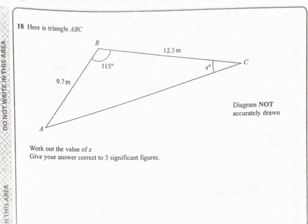Number 18, here is triangle ABC. Work out the value of X. Give your answer correct to three significant figures. In this triangle we have two sides and the included angle, then using cosine rule we can find AC.